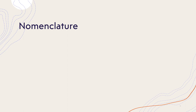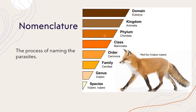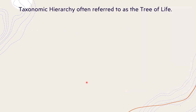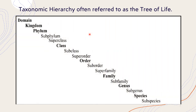Before discussing the guidelines and principles of SNOPAD, let us first define nomenclature. Nomenclature is the process of naming the parasites. Members belonging to the animal kingdom are classified into phyla, classes, orders, families, genus, and species. Later, additional categories such as super or sub were created to accommodate the increasing number of species discovered over the years, prefixed to existing categories — for example, superfamily and suborder.